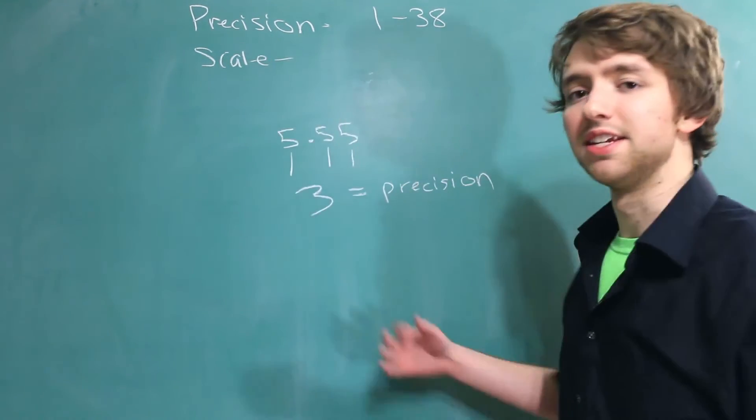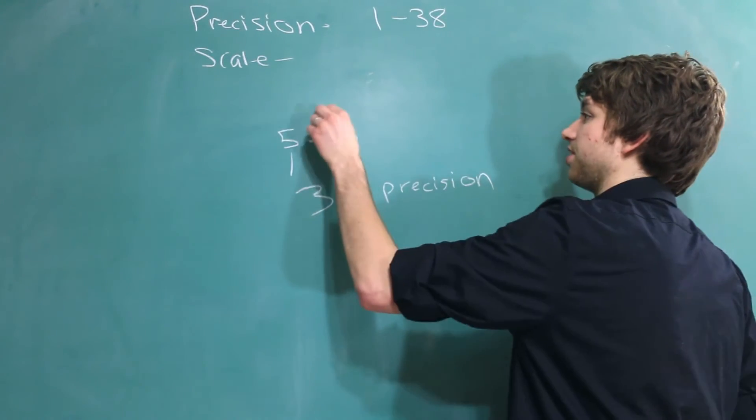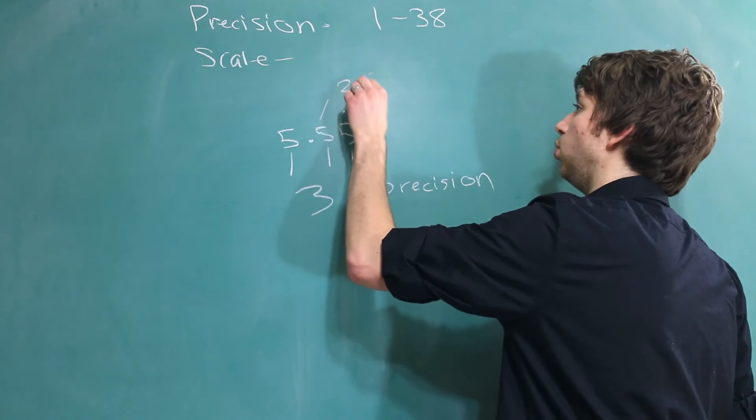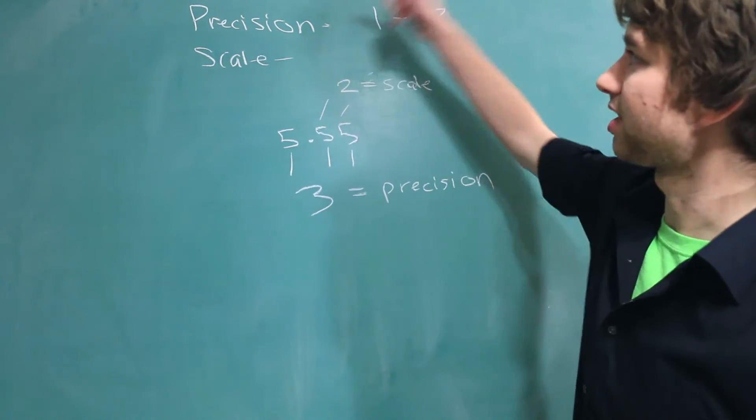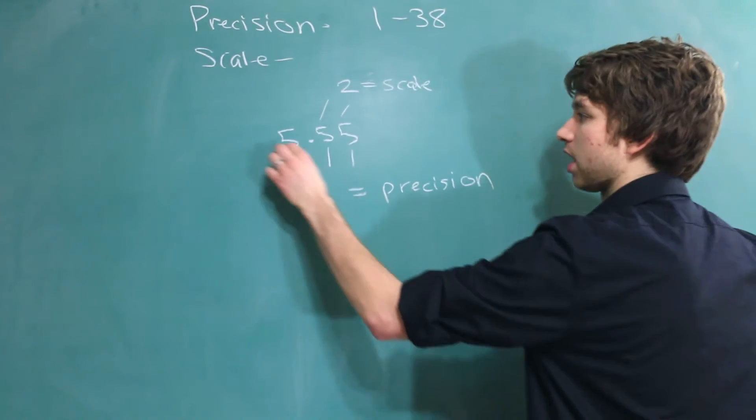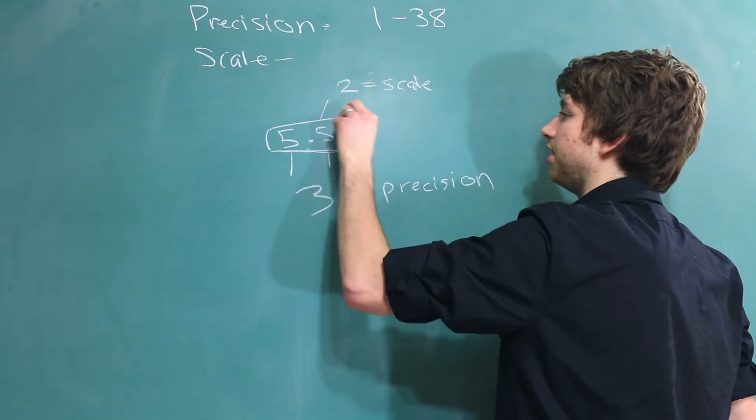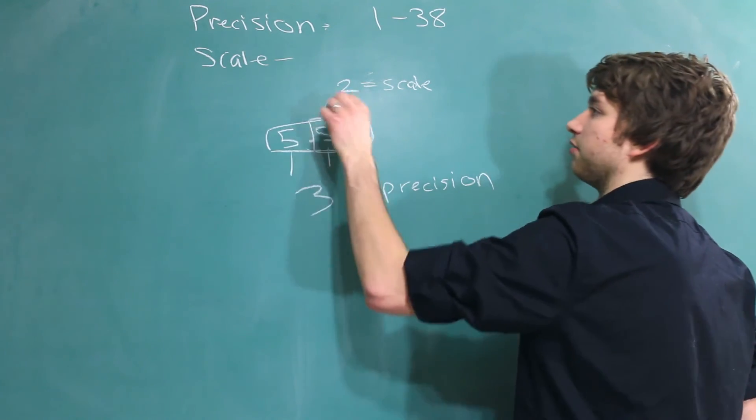Scale on the other hand is the number of digits after the decimal point. So in this situation the scale is 2. And note that the precision includes the scale. So the entire number is considered for the precision. But only the number after the decimal point is considered for the scale.